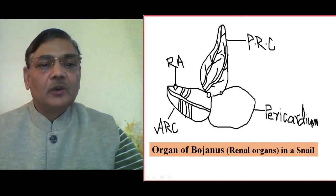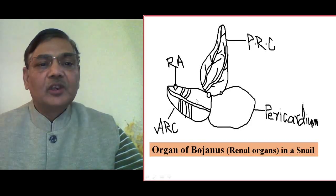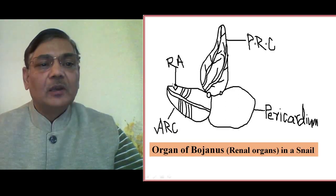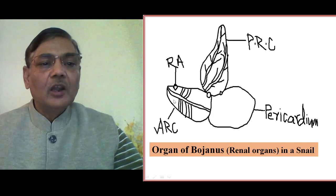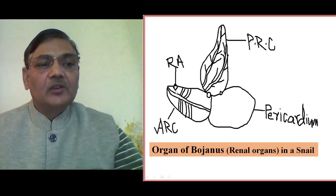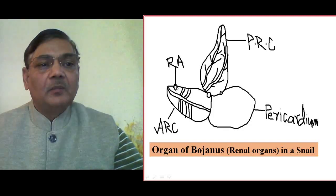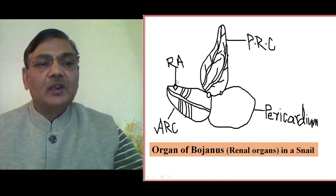A line diagram has been made to show the position of the kidneys and their association with other organs. The anterior renal chamber, with the afferent renal sinus and lamellae present on it, opens into the mantle cavity through the renal aperture. This renal aperture opens into the branchial chamber of the mantle cavity, so that excretory materials can be released outside.